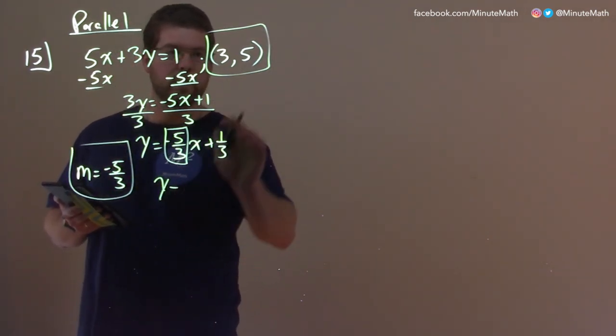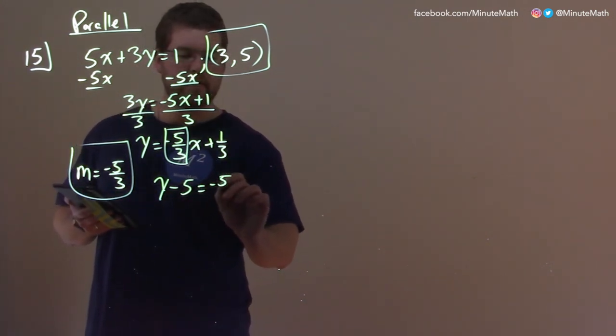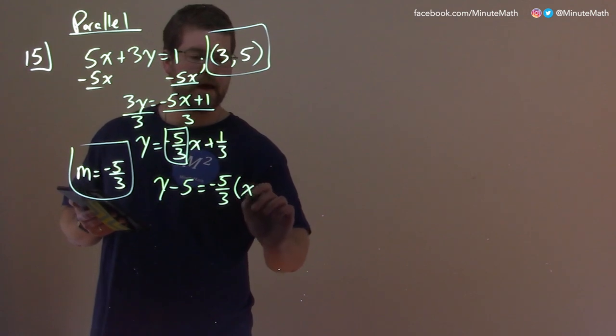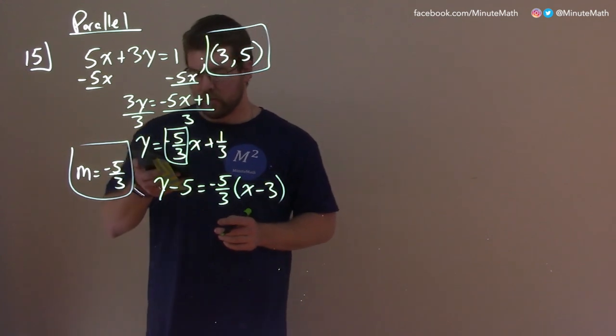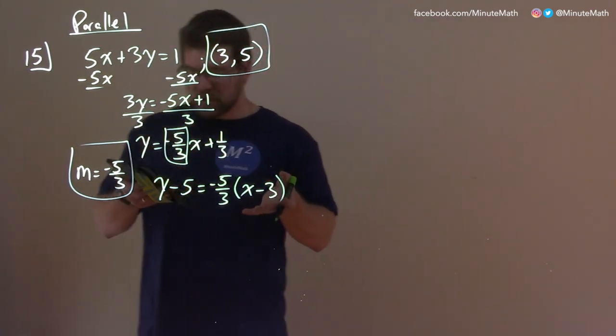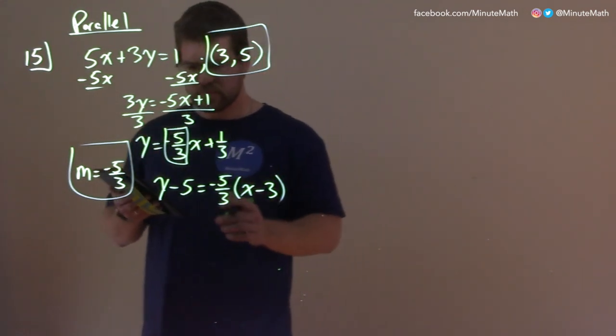So we have y minus the y-coordinate 5 equals our slope, negative 5 thirds, x minus the x value for our point-slope form. And now it's pretty easy. We have essentially our answer, but we can simplify this, and let's write it in slope-intercept form.